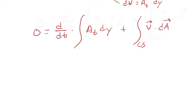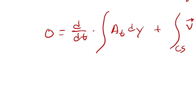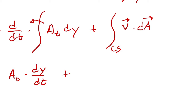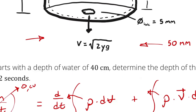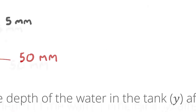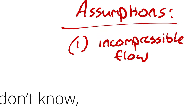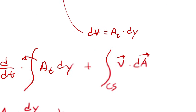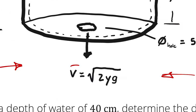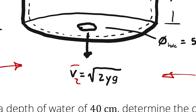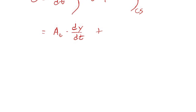The area on top doesn't change with respect to time, so I can bring that out, giving A_t times dy/dt. Then on the right, treating this as uniform flow with an average velocity, the velocity vector and area vector are in the same direction, so I write that as the average velocity at state 2 times area at state 2. I'm calling the outlet state 2 and the top state t. Area at state 2 is the area of a circle with a diameter of 5mm.